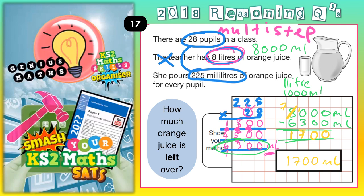They've deliberately not put any units in this answer box because this is a mixed units question. So 1,700 millilitres is correct, but you could also turn that into litres. Remember, 1,000 millilitres is 1 litre, so this 1,000 could be 1 litre and the 700 would be 0.7, because 500 millilitres is 0.5, 600 is 0.6, and 700 is 0.7. So you could also say 1.7 litres. Both 1,700 millilitres and 1.7 litres would be acceptable answers.